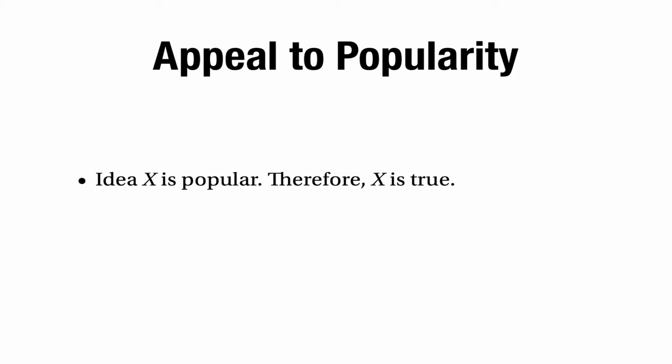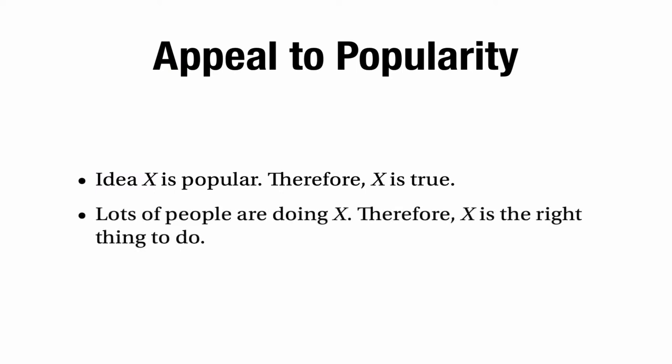First of all, let's look at the appeal to popularity. This happens when somebody argues that some idea X is really popular, so therefore X must be true. Or alternatively, they say lots of people are doing X, therefore X is the right thing to do. So it's an argument from the popularity of something to it being correct or right.